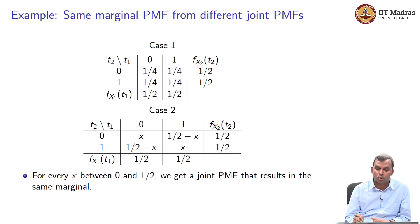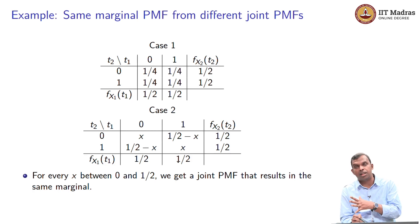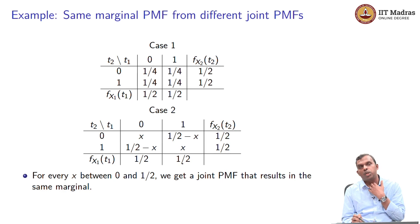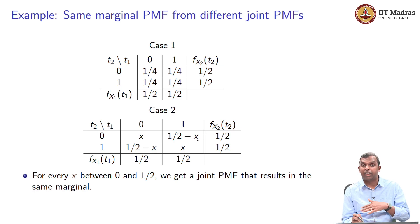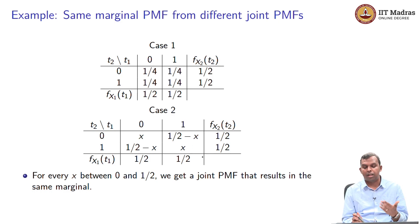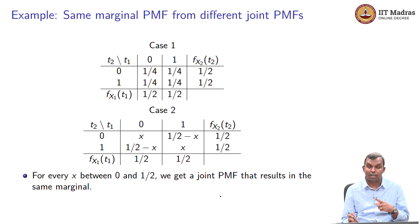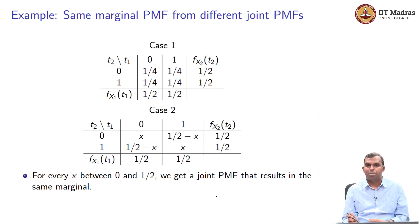Notice what has happened here — this is very, very important: you can go from the joint PMF to the marginal in a unique way. You cannot go from the marginal to the joint PMF in a unique way. Usually, given the marginal alone, there can be an infinite number of joint PMFs giving you the same marginal PMF. One way is definitely unique; the other way is not unique at all.